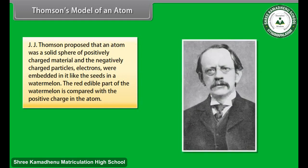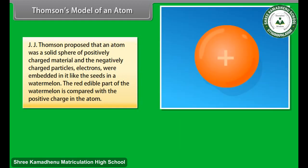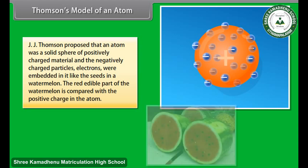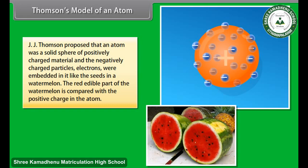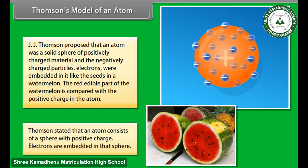Thomson's Model of an Atom. J.J. Thompson proposed that an atom was a solid sphere of positively charged material and the negatively charged particles, electrons, were embedded in it like the seeds in a watermelon. The red edible part of the watermelon is compared with a positive charge in the atom. Thompson stated that an atom consists of a sphere with positive charge. Electrons are embedded in that sphere.